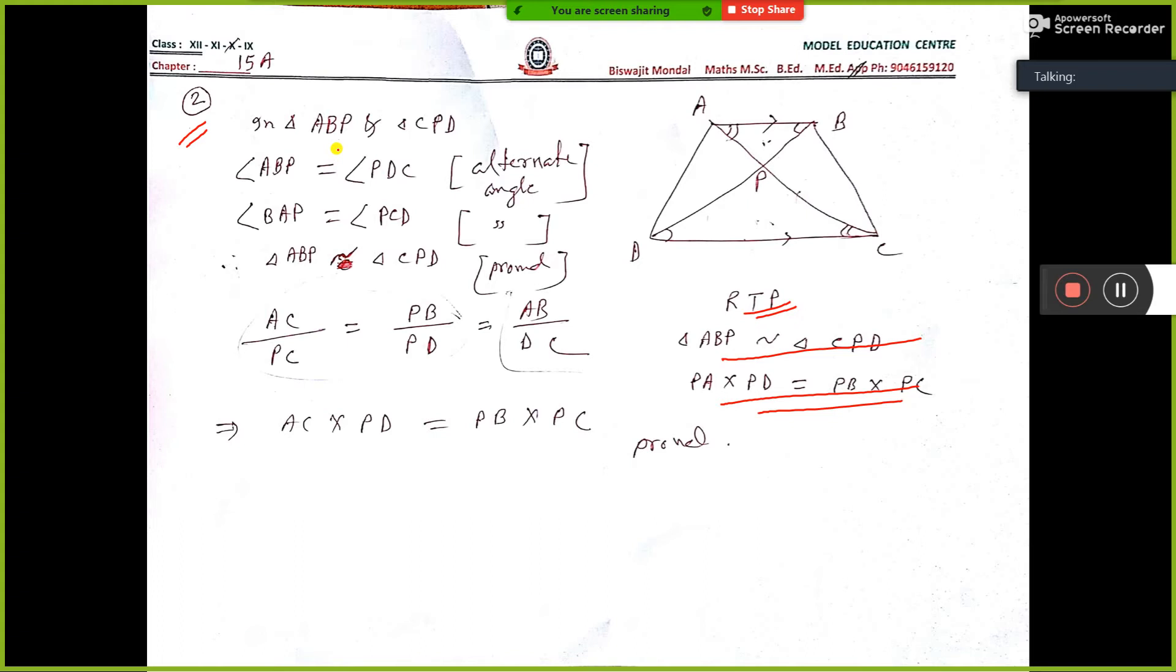Now see, I have taken ABP and CPD, these two triangles. And we can tell this angle is equal to this angle, that is angle ABP is equal to angle PDC, alternate angle. Similarly, angle BAP is equal to angle PCD. This is also alternate angle. So we can tell these two triangles are similar by angle-angle property.